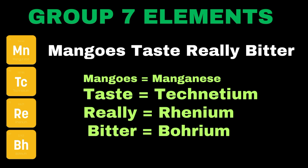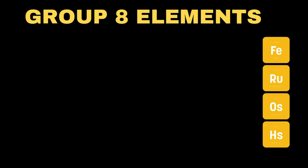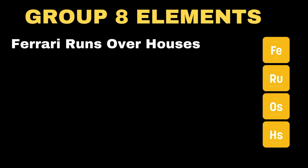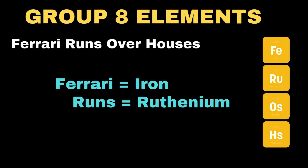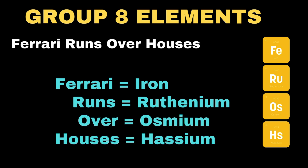Moving towards group 8 elements, the easy trick I use to remember their names is: 'Ferrari runs over houses.' Here 'Ferrari' represents iron (symbol Fe), 'runs' denotes ruthenium, 'over' refers to osmium, and 'houses' denotes hassium.